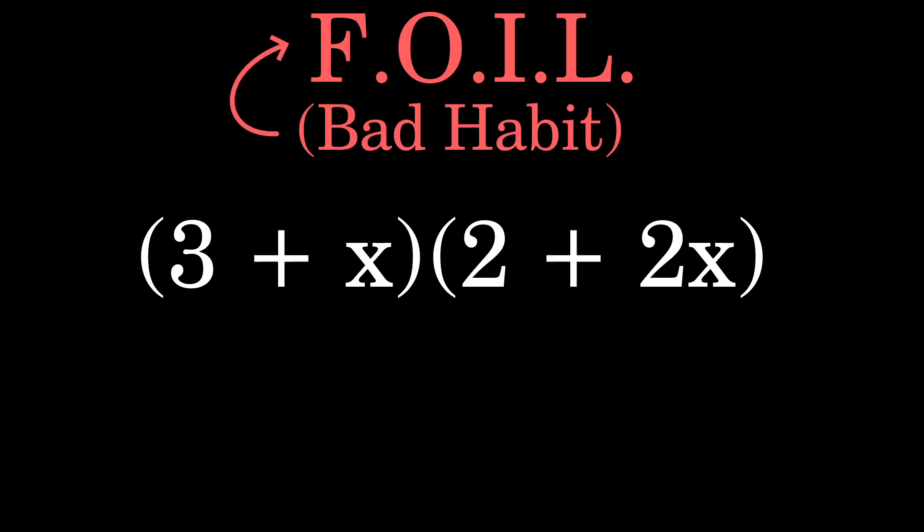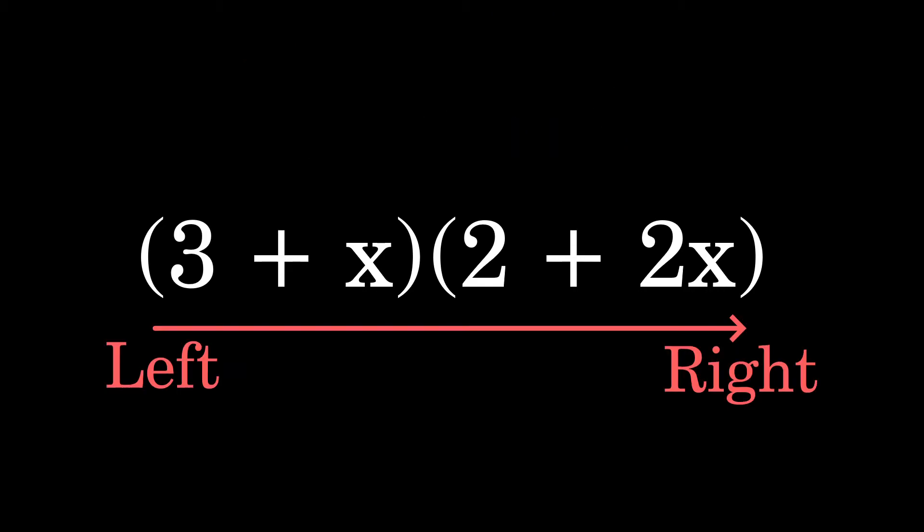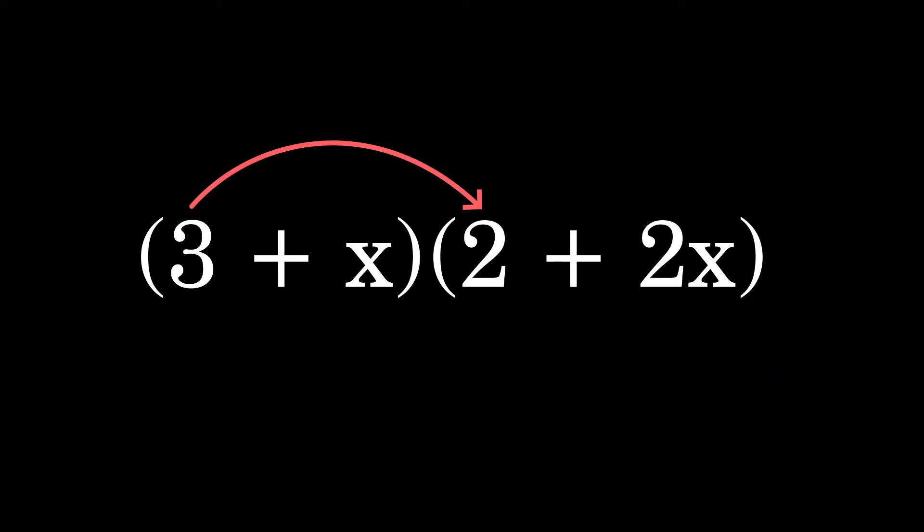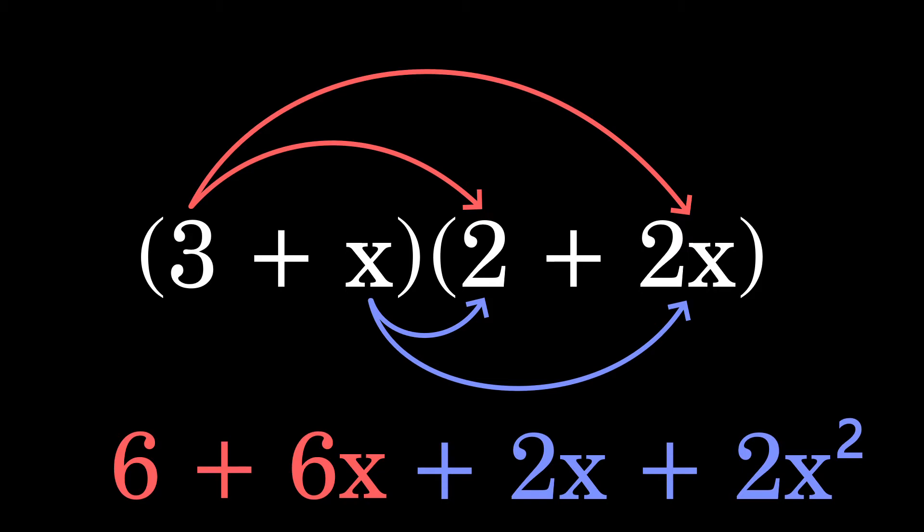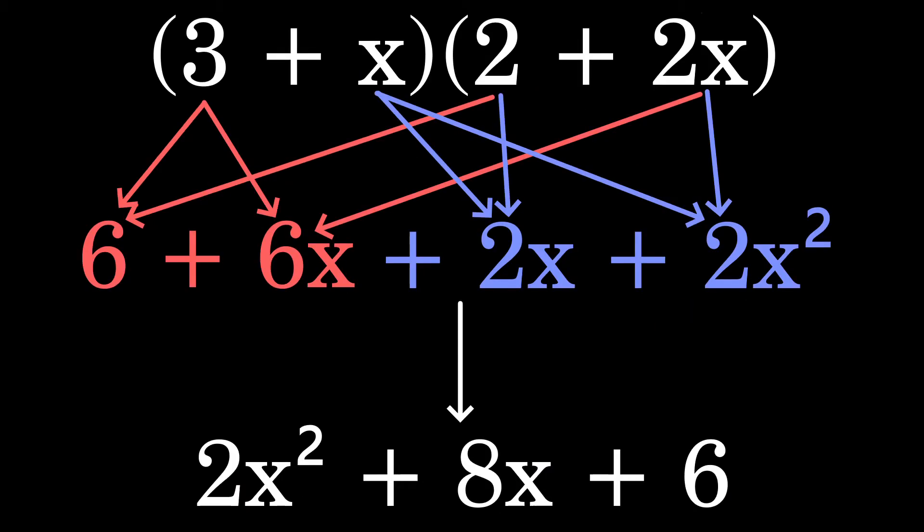I tend to stay away from this method since it becomes a bad habit later on. FOIL is only really useful when dealing with quadratic factors, which quickly falls apart when you have more than two pieces in each group, which I'll show later. Instead I work from left to right. Start with 3 and distribute that value into 2 and 2x to get 6 plus 6x. Then do the same with x to get 2x plus 2x squared.